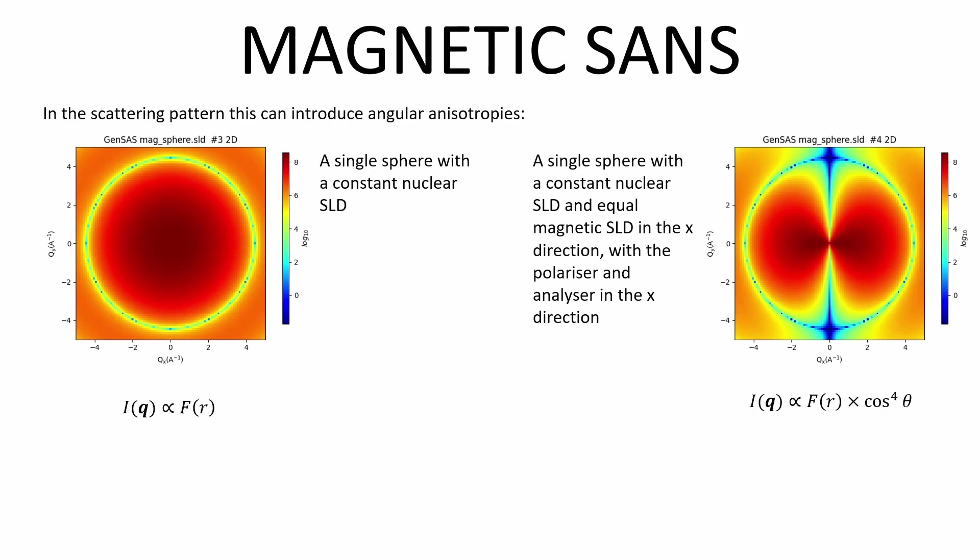As an example, consider a sphere. With purely nuclear scattering, we get the expected circularly symmetric pattern. If we introduce a symmetry-breaking magnetisation aligned perpendicularly to the beam, we also gain an angular anisotropy in the scattering pattern.